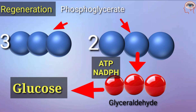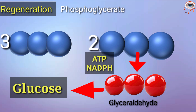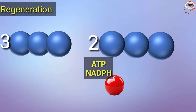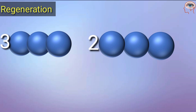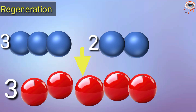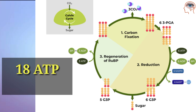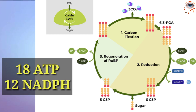In the last step, one molecule of G3P is used to make glucose and the other 5 molecules of G3P are used to regenerate the 5-carbon compound RuBP for the next cycle. In total, 18 ATP and 12 NADPH are consumed to produce one molecule of glucose, coming from the light reactions.